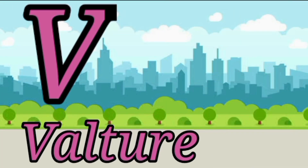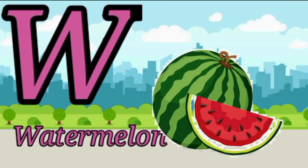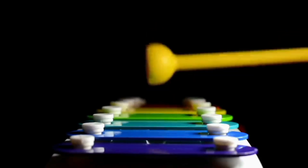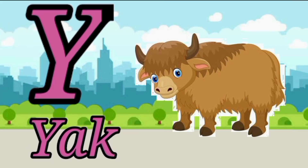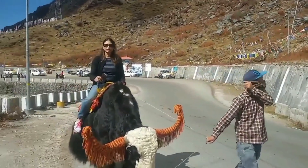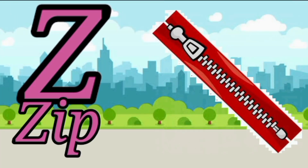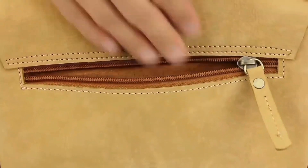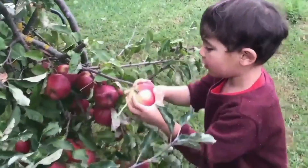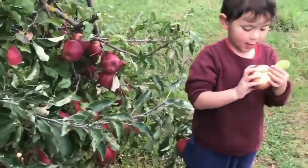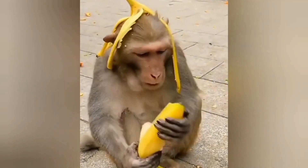V for vulture. W for water. X for xylophone. Y for yak. Z for zebra.